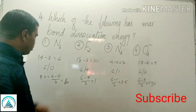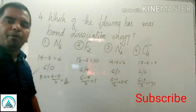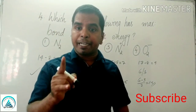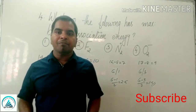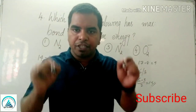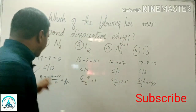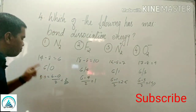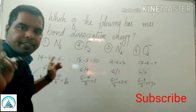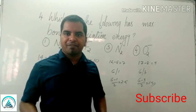Maximum bond order is in the case of N2 (bond order = 3). Since bond order is directly proportional to bond dissociation energy, N2 has the maximum bond order and maximum bond dissociation energy.